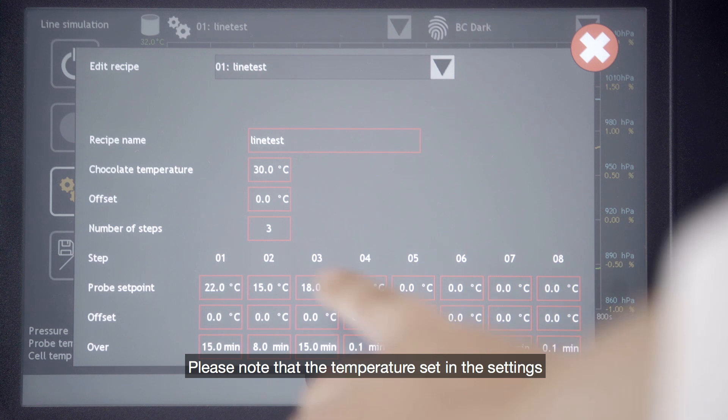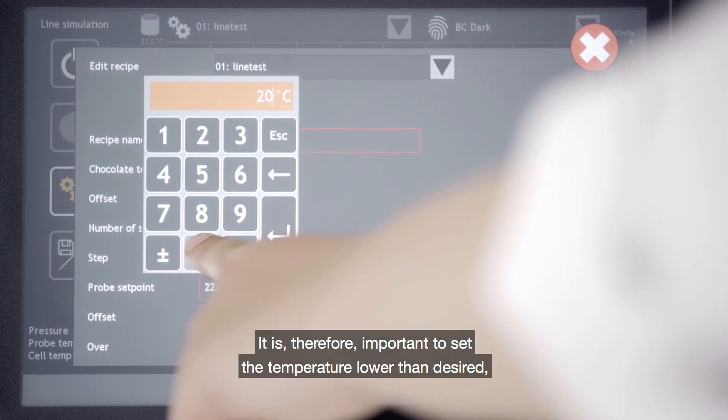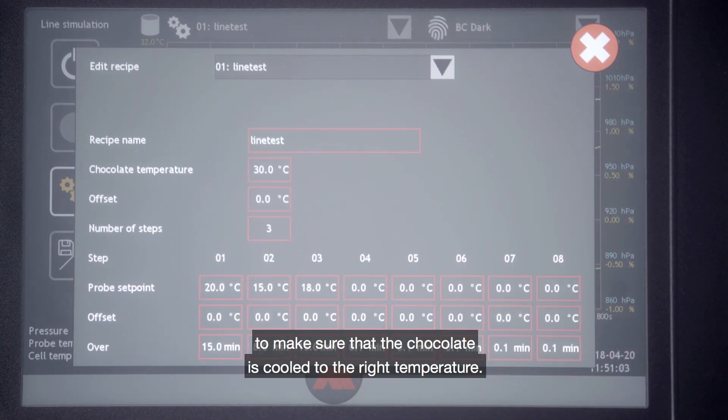Please note that the temperature set in the settings is the cooling temperature of the cell and not for the chocolate. It is therefore important to set the temperature lower than desired to make sure that the chocolate is cooled to the right temperature.